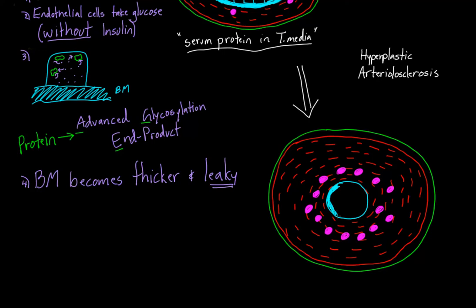This basement membrane has on the other side of it the endothelial cells. We've got the same layers as before, but the main thing I want you to see is that the tunica media is thick, specifically because of all the smooth muscle cells dividing.